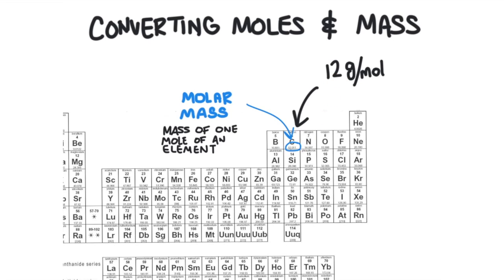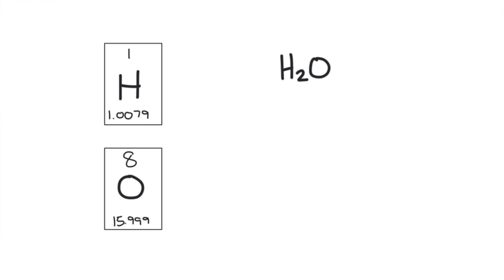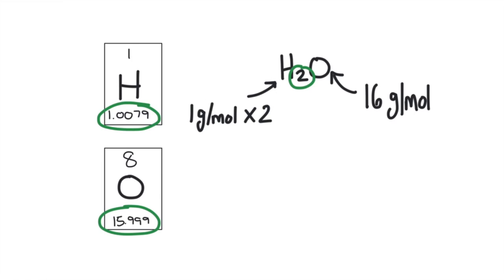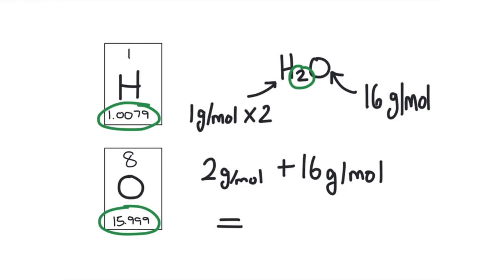If we're dealing with a chemical compound like H2O, we need to add up all the molar masses of the individual elements to determine the molar mass of the entire compound. You have to keep track of the number of each element. Oxygen has a molar mass of 16 grams per mole and hydrogen has a molar mass of 1 gram per mole. There are two hydrogens, so we multiply the molar mass of hydrogen by 2, and then add it to the molar mass of oxygen, which is 16 grams per mole. We get a total of 18 grams per mole.